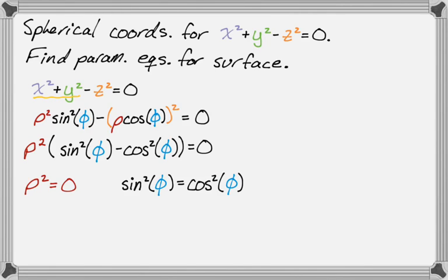So let's think about it. We know that we're looking for a cone. So there's no way that the equation is just rho equals zero. So this is actually just kind of an extraneous thing.